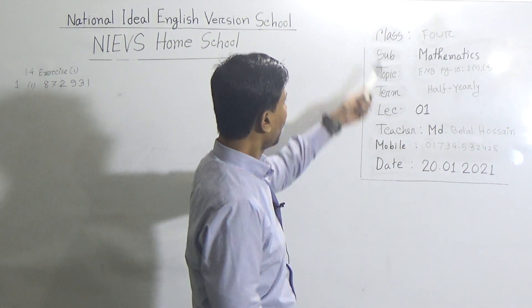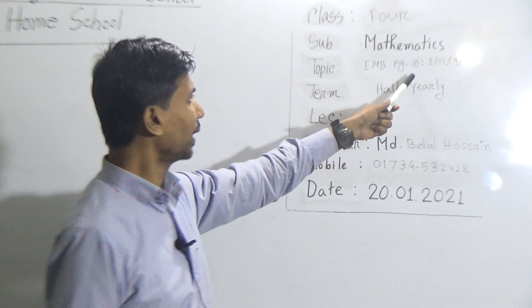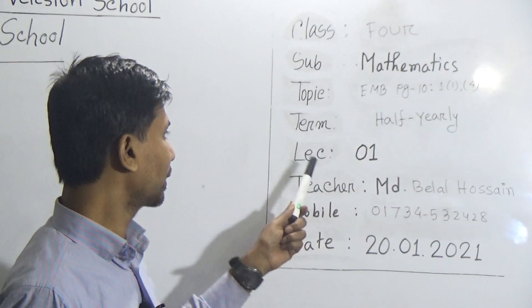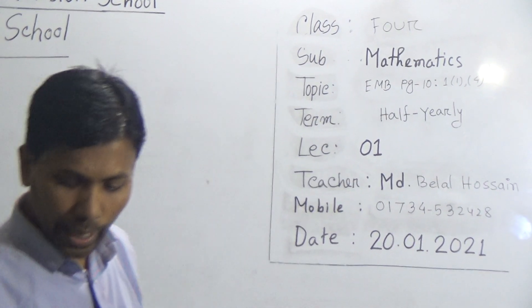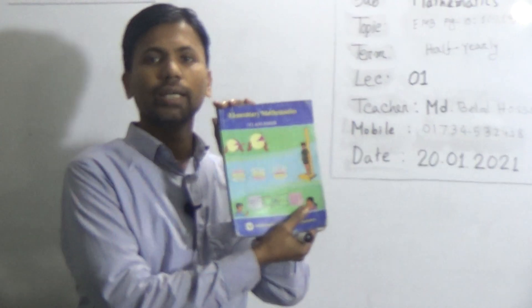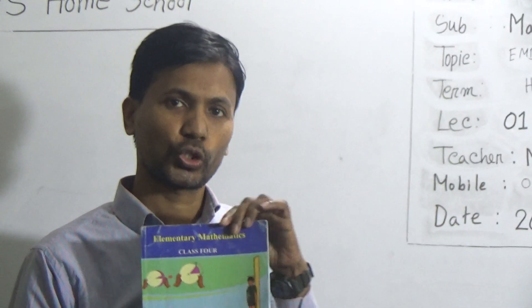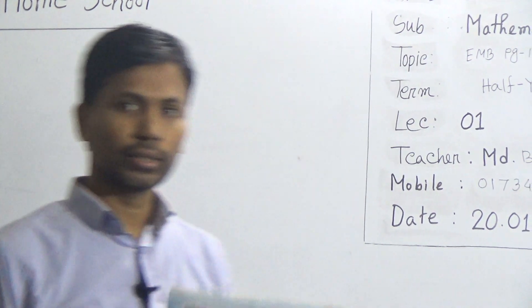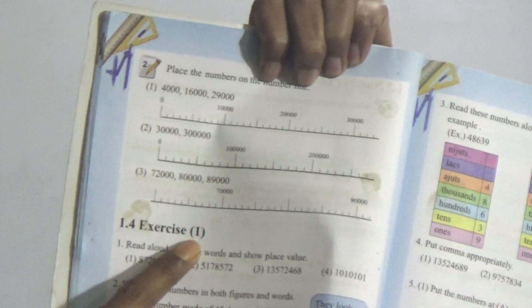Our topic is EMP-based, page 10, Question 1, exercise 1.4. The EMP book — that means this book — is called Elementary Mathematics, whose short name is EMP. Page number 10, exercise 1.4.